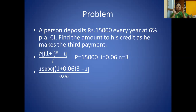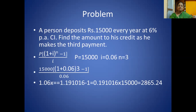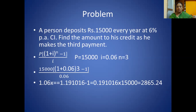The bracket tells you to consider it first: 1.06 raised to the power of 3. Enter 1.06, press multiplication, then press equal 2 times (since 3 − 1 = 2). You get 1.191016. Subtract 1 to get 0.191016, multiply by 15,000 to get 2,865.24, divide by 0.06. Answer: 47,754.